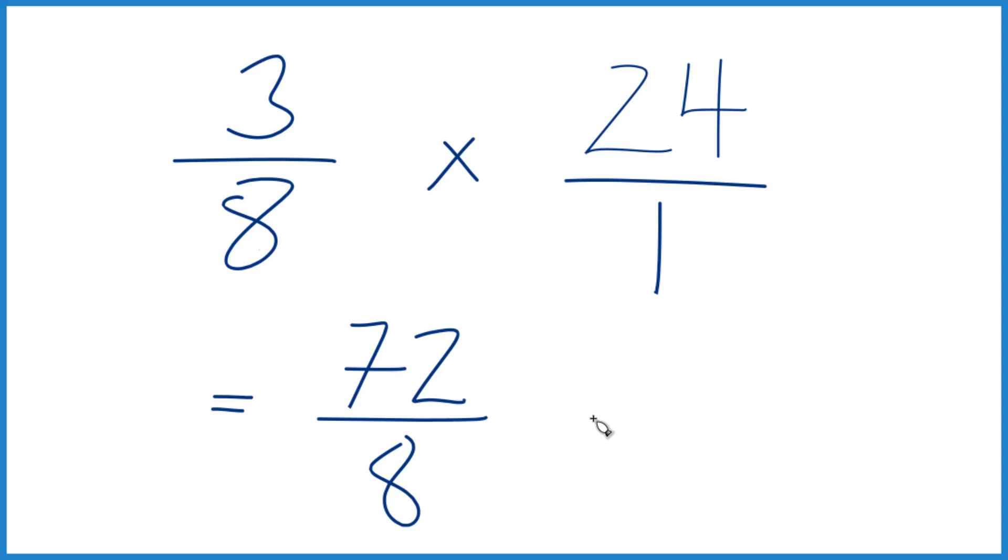If you divide 72 by 8, 8 goes into 72 nine times. 9 times 8 is 72. So 3 8ths of 24, that's 9.